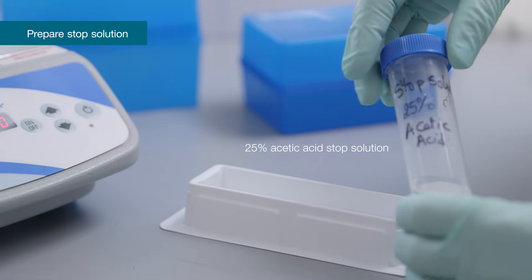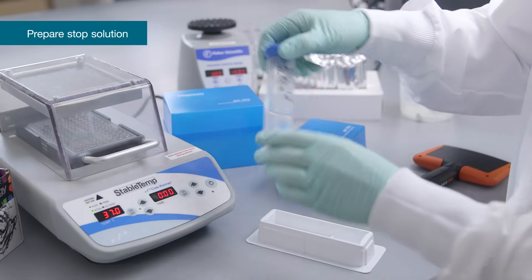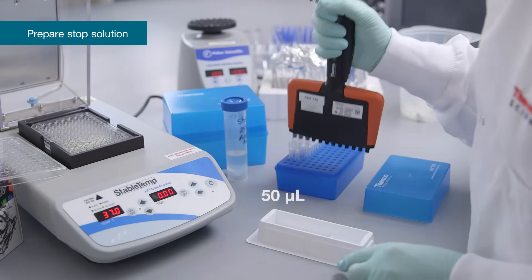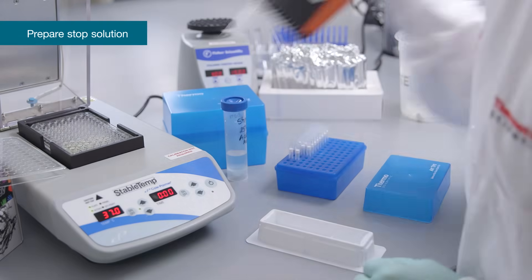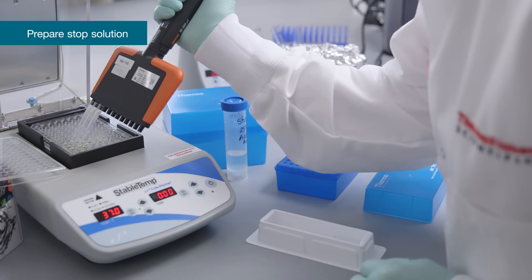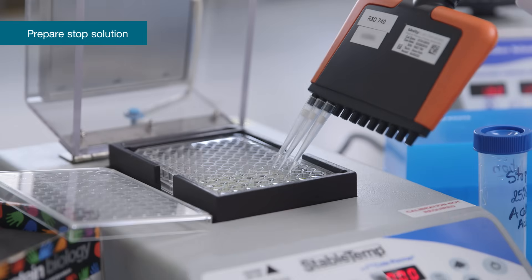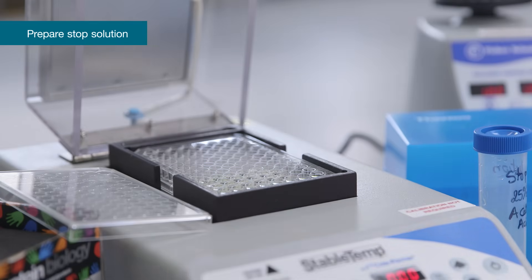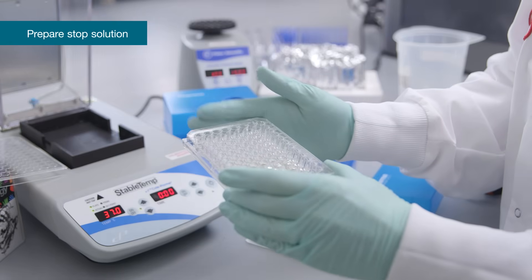During the incubation time T2, prepare a 25% acetic acid stop solution. Add 50 microliters 25% acetic acid per well to stop the reaction. Remove the plate from the heater and gently tap 10 times on the side of the plate to mix.